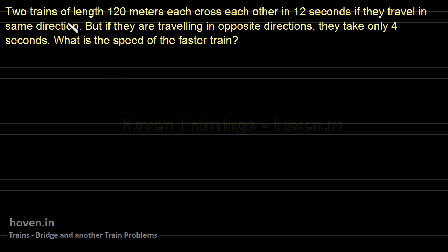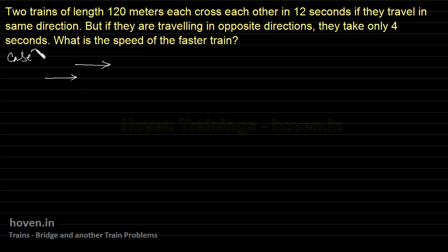This question says two trains of length 120 meters each cross each other in 12 seconds if they travel in the same direction. That is one condition. But if they are traveling in opposite directions, they take only 4 seconds. So I have two trains, each 120 meters long, moving either in the same direction or in opposite directions.